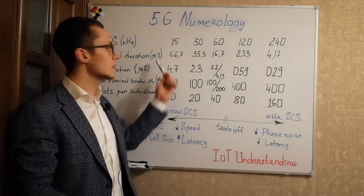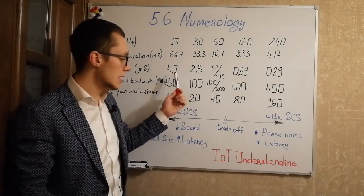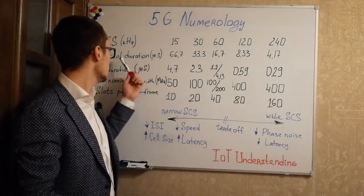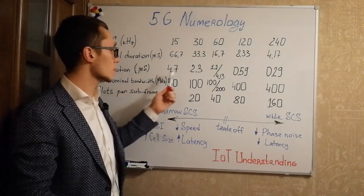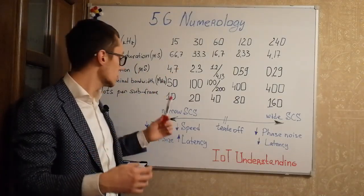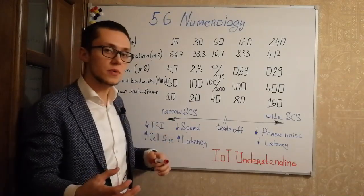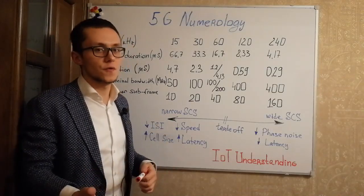Because the scheduling mechanism operates in the time domain, and we have such a large symbol duration with just 10 slots per subframe, scheduling doesn't work so fast.